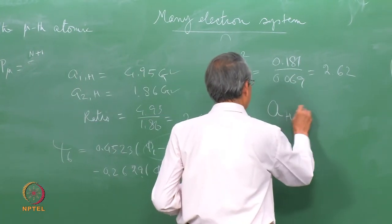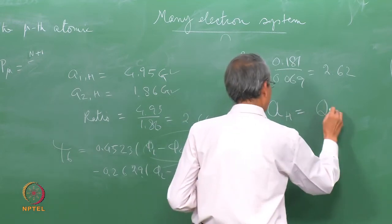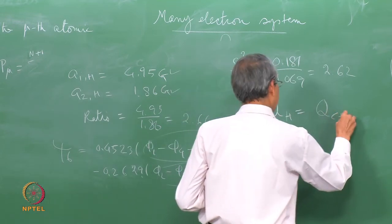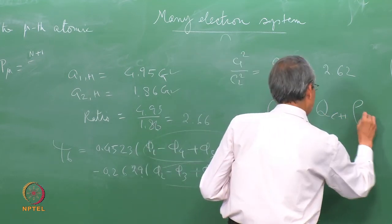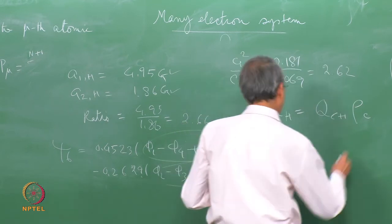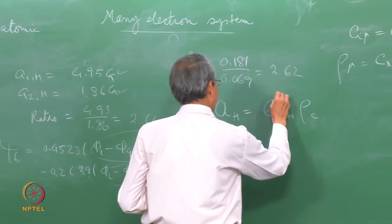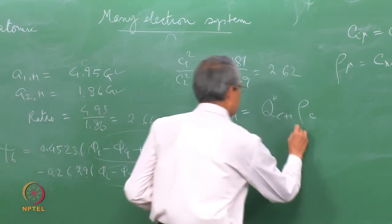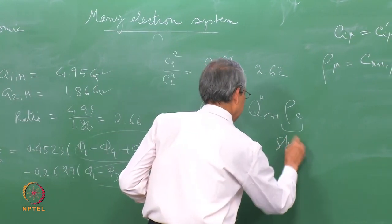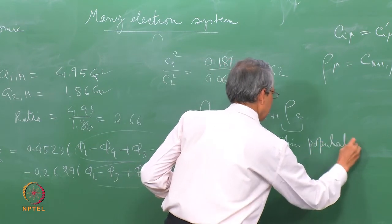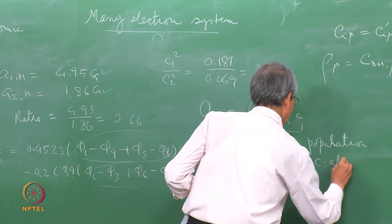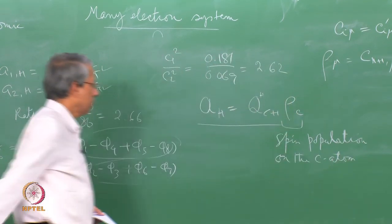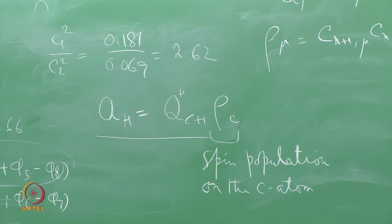From this we can write: A(H) = Q_{CH} × ρ_C, where A(H) is the observed hyperfine coupling constant, Q_{CH} is a carbon-hydrogen parameter, and ρ_C is the spin population on the carbon atom. This was found to be empirically true for many organic aromatic hydrocarbon radicals.